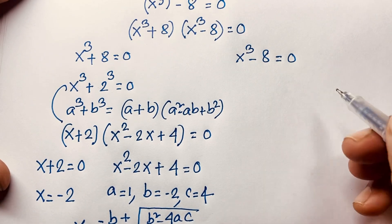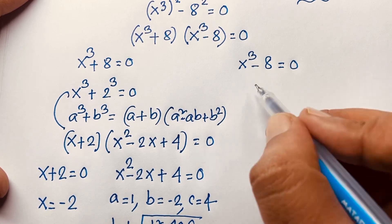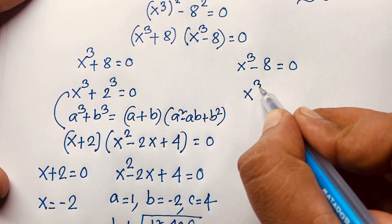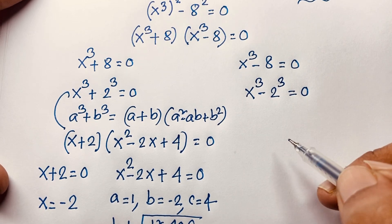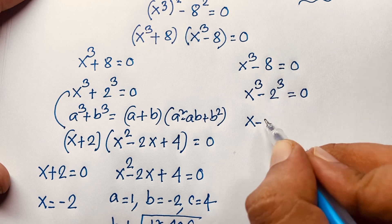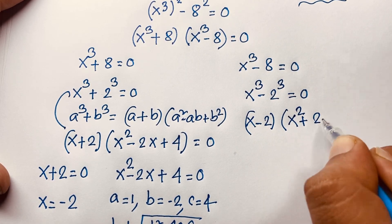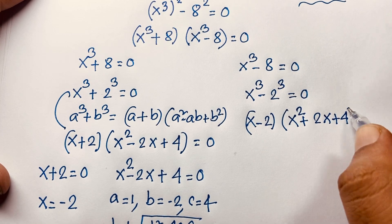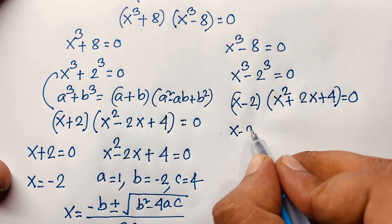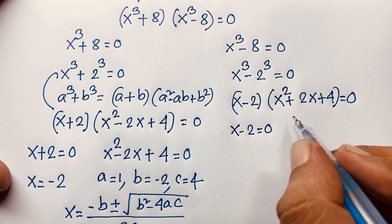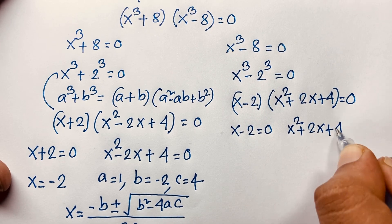Now for Case 2: x³ − 8 = 0, which is x³ − 2³ = 0. Applying the difference of cubes formula — a³ − b³ = (a − b)(a² + ab + b²) — we get (x − 2)(x² + 2x + 4) = 0.